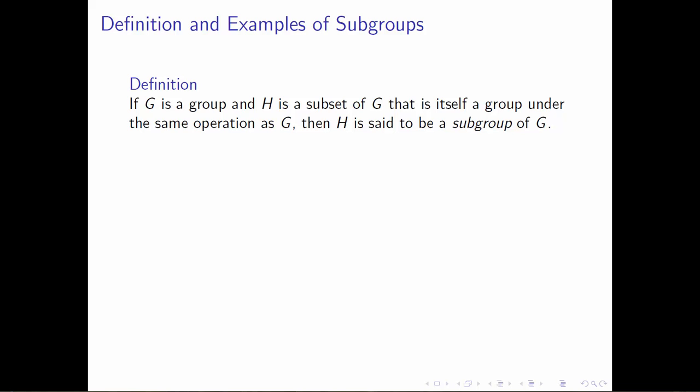In all of mathematics, you find this sort of universal notation for sub-something. If you're dealing with some type of structure that has a whole bunch of properties, then any arbitrary subset that satisfies the same types of properties is called the same sub-something. So in this case, if we have a group and a subset that is also a group, and if we're using the same group operation, then we call this subset a subgroup of the original group G.